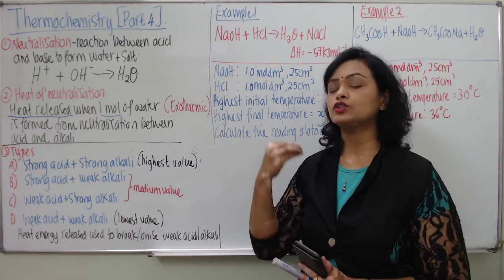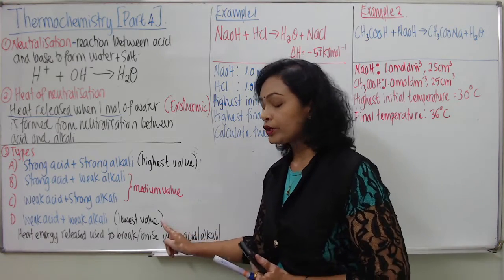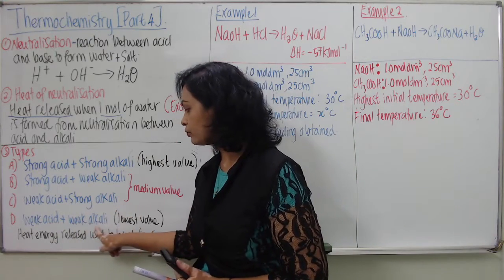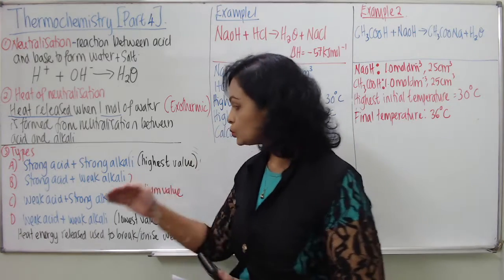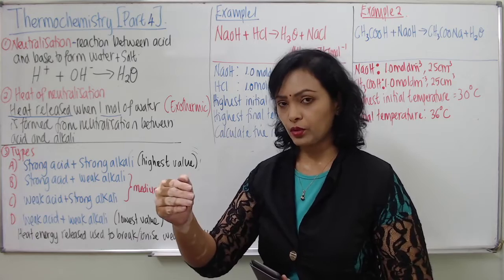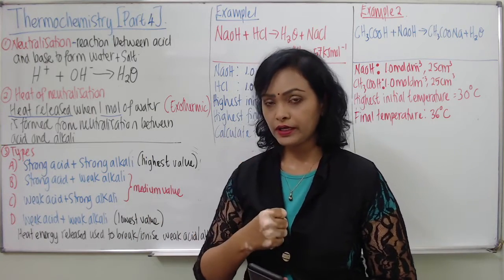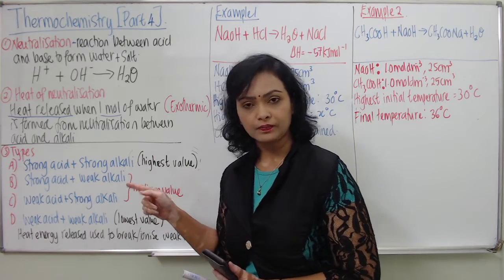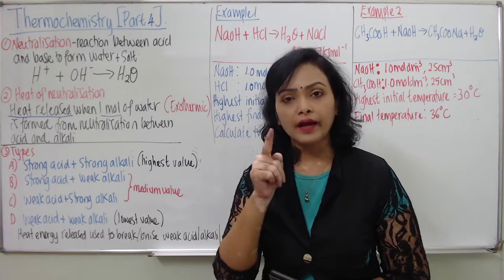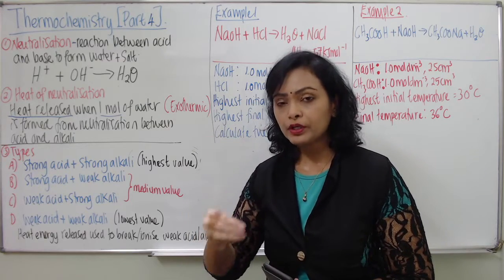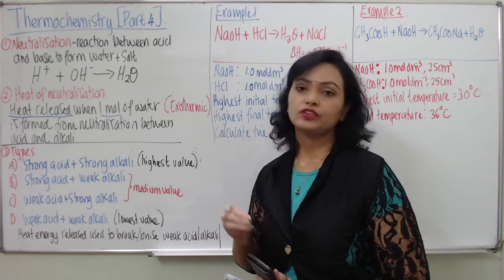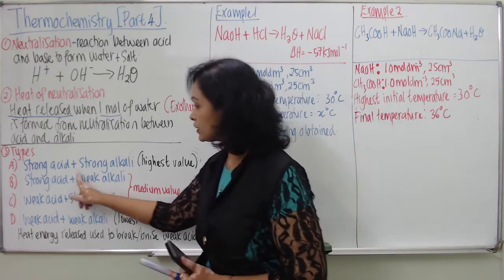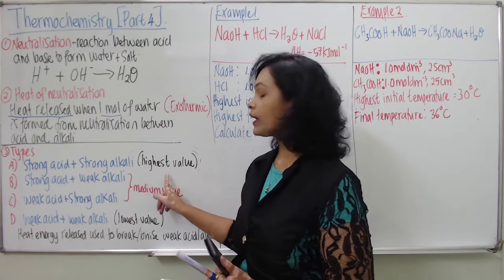That is why the thermometer shows a higher temperature reading for strong combinations. For weak acid and weak alkali, or weak acid with strong alkali, the heat energy released during neutralization is technically recycled — used by the weak alkaline and weak acid to ionize further into hydrogen and hydroxide ions. They reuse the heat energy produced during neutralization for the ionization process. That is why weak acid and weak alkaline always has the lowest heat of neutralization value.